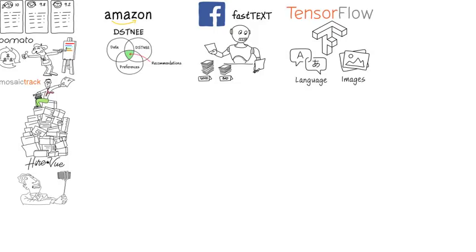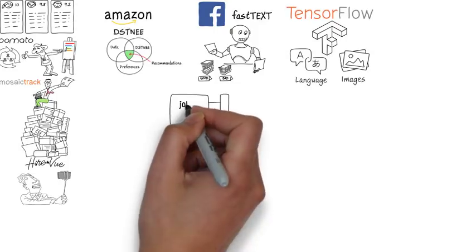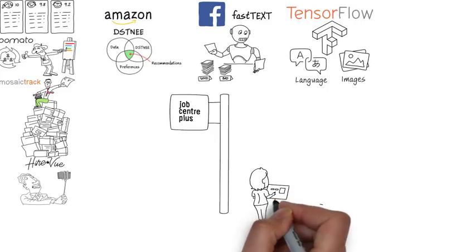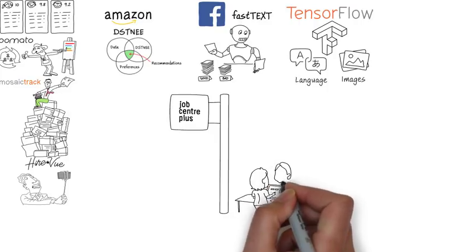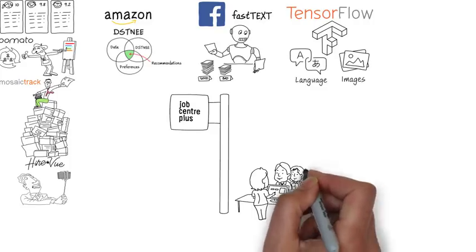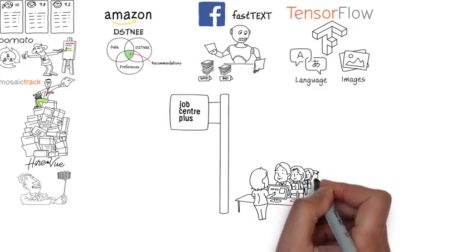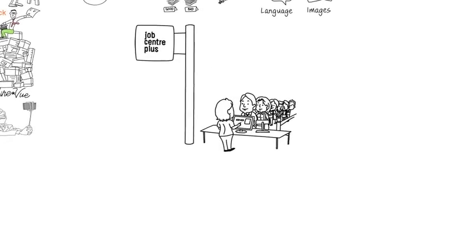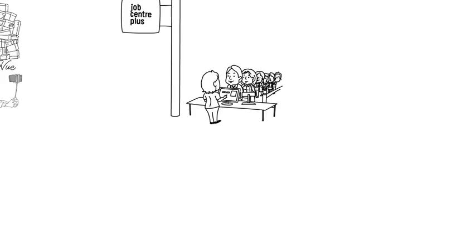So now, let's look at a business problem and see how these tools might make a practical contribution to the solution. Job Centre Plus is the UK government employment agency. Like many government agencies, it's facing budget cuts, which leads to reduction in staff and premises. Could AI be used to improve the service at a time when resources are being reduced? Let's have a look.